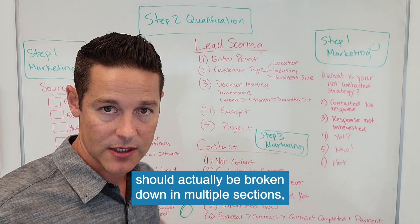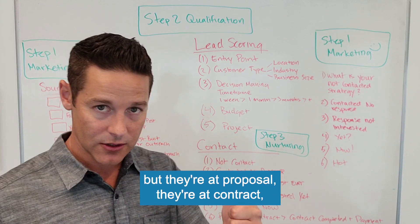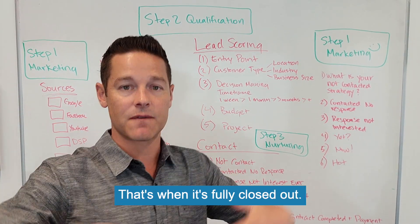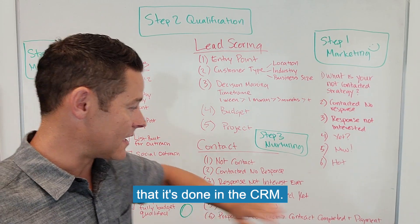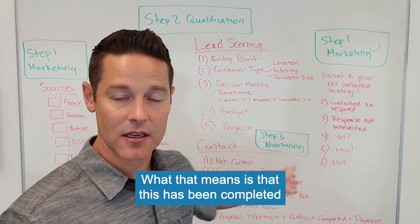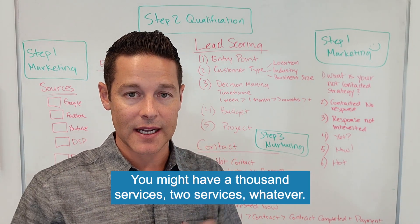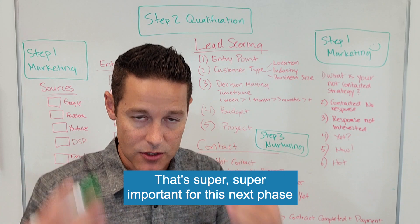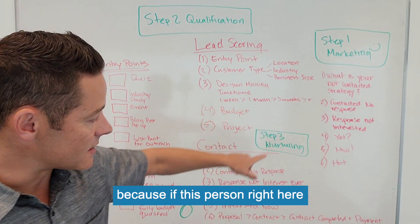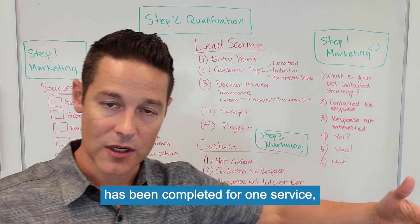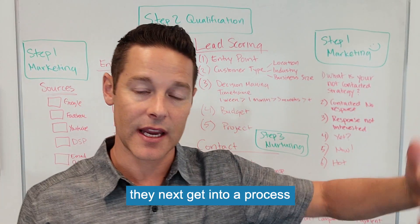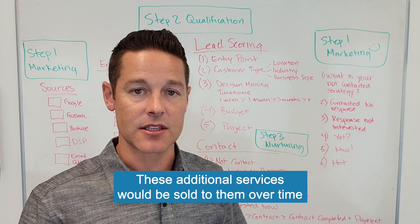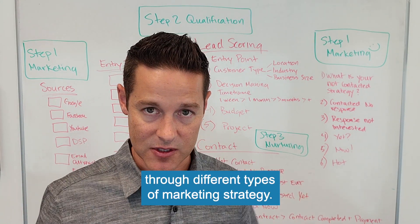The final part should be broken down into multiple sections: at proposal, at contract, contract completed, and then payment — which is when it's fully closed out. But at that point it doesn't mean it's done in the CRM. That means this has been completed for one service. If this person has been completed for one service, they next get into a process to be sold on additional services over time through different types of marketing strategy.